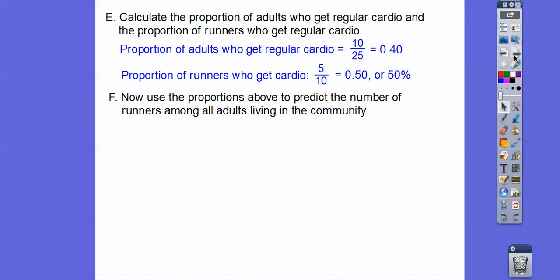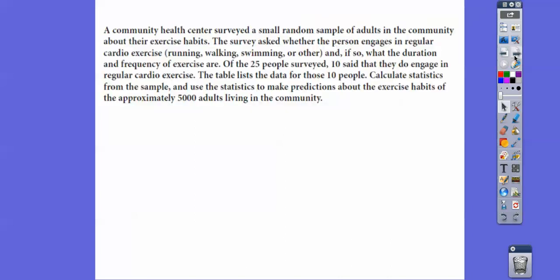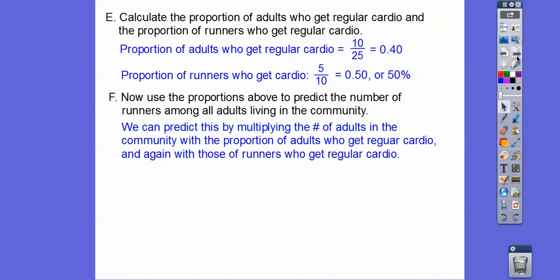So now use the proportion above to predict the number of runners among all adults living in the community. So what we have to do is recognize there's 5,000 people living in the community right here. So we can predict this by multiplying the number of adults in the community with the proportion of adults who get regular cardio exercise. So that would be this 40%. Or 0.40. And then of those, of that 40%, half of those guys are runners right there. So what we're going to do is take that 5,000 people, multiply it by 40%, and then multiply it times 50%. And so that's going to get us 1,000. So about 1,000 people did get that right there.